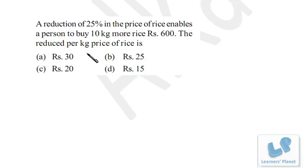That 1/3 extra corresponds to 10 kilograms more. So 1/3 equals 10, which means the whole — that is the original quantity — is 30 kilograms. So the original quantity is 30 kilograms.